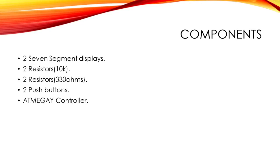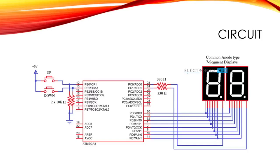Components used in the circuit of two digit counters are two seven segment displays, two resistors of value 10k, two resistors of value 330 ohms, two push buttons and ATMEGA controller. So this is the circuit diagram of the two digit counter.